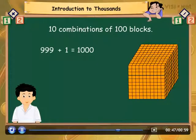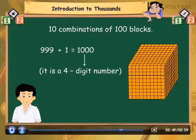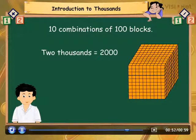You can observe that one thousand is the first four-digit number. Similarly, two thousand is the group of two thousands, three thousand is the group of three thousands, and so on.